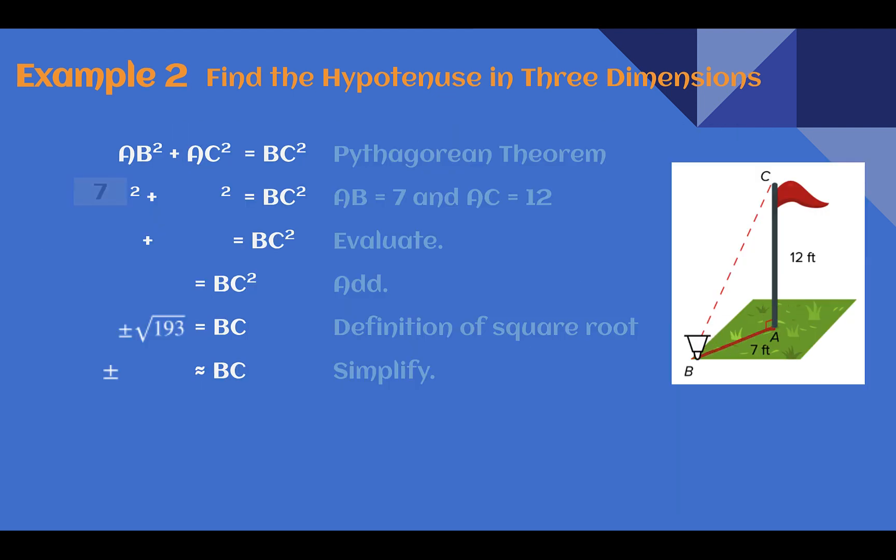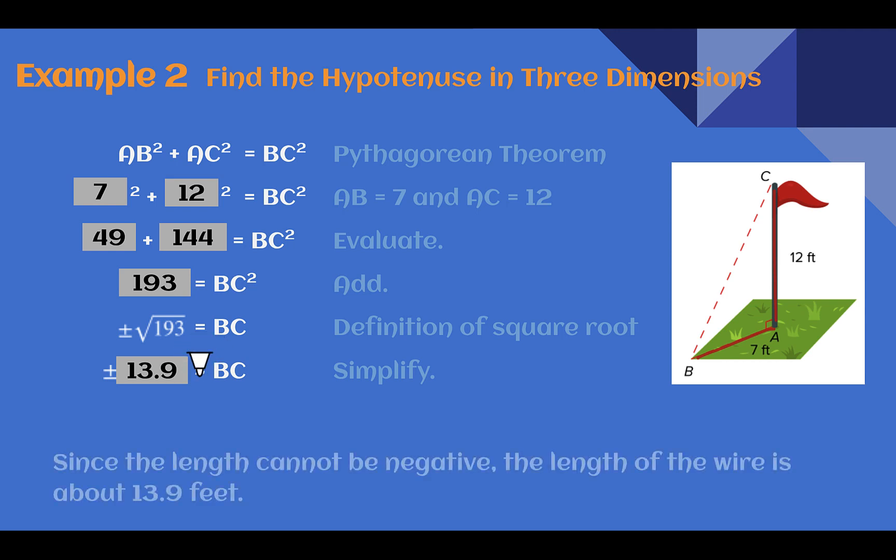So first, AB is 7. AC, our other leg, our height here was 12. If we square those, 7 squared is 49, 12 squared is 144. We're going to add those together, and we get 193. So our square off our hypotenuse was 193. To find that side length, we take the square root. The square root of 193 is not a perfect square, so we're going to need to use a calculator. It comes out to about 13.9, and since we rounded off, we're going to use our little squiggle equal sign. Again, that means approximately equal to.